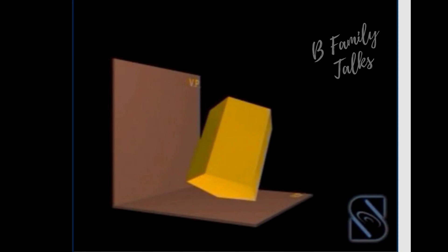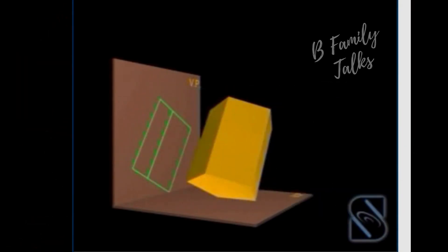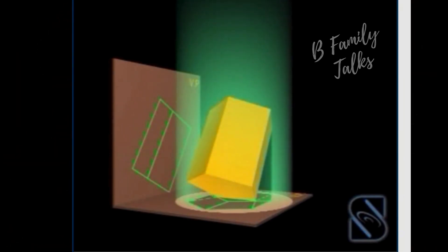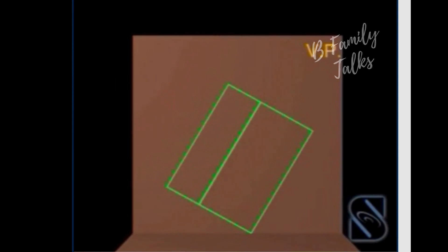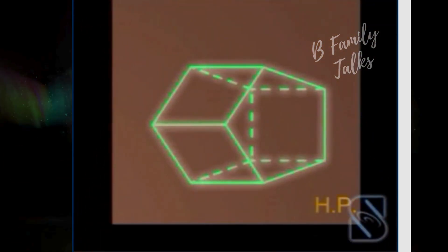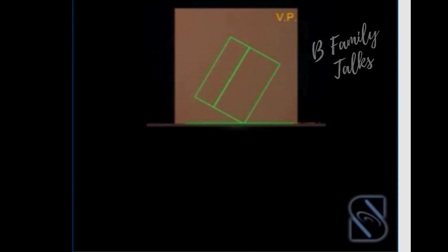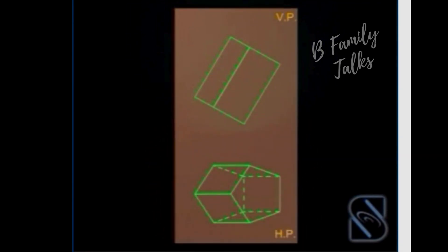Position the solid in the first quadrant. Look at the solid from the front to obtain the front view as shown in the figure. Look at the solid from the top to obtain the top view as shown in the figure. Rotate the horizontal plane 90 degrees clockwise to get the projection. Now the required projections are obtained.